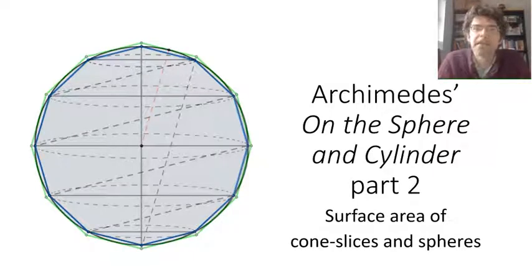areas of cylinders and isosceles cones, and that leaves us in a position now to move on to one of his most important results: that the surface area of a sphere is four times the area of the circle through its equator.